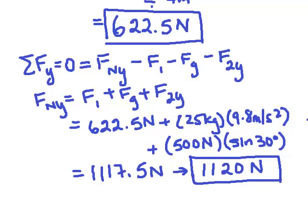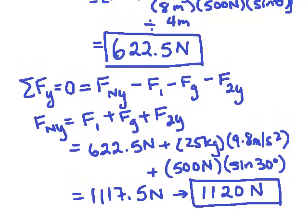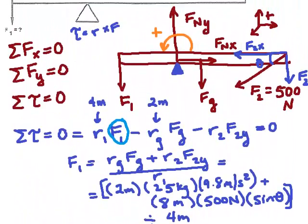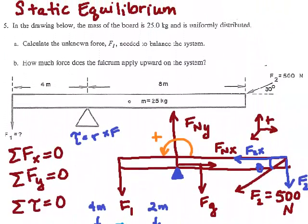Hopefully you understand now how to do a simple static equilibrium problem. Again, the important points for any static equilibrium problem is that sigma F in the x direction equals zero, sigma F in the y direction equals zero, and sigma tau equals zero. So all those things are true when we have no translation and no rotation.